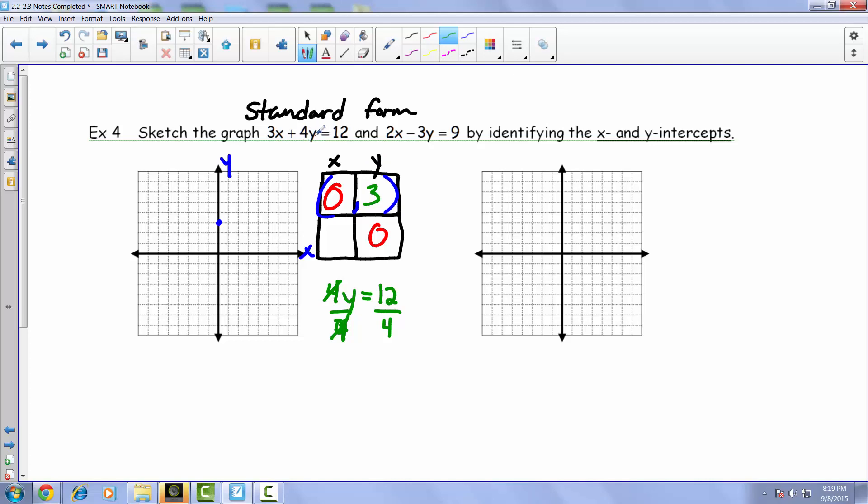Well, essentially this piece would be gone again, just like we did with x's a moment ago. So then we're just left with 3x is equal to 12. Well, 3 times what would give you 12? 4 would accomplish that.